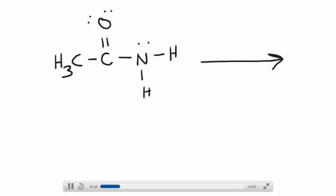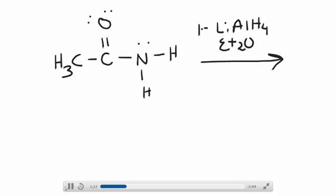What you are going to find on the arrow are a set of conditions. You're going to use lithium aluminum hydride, and the hydride is a very strong base, so we use a solvent like diethyl ether that does not have any acidic protons available to it. After all is said and done, you usually do use an acid workup to neutralize any leftover base.